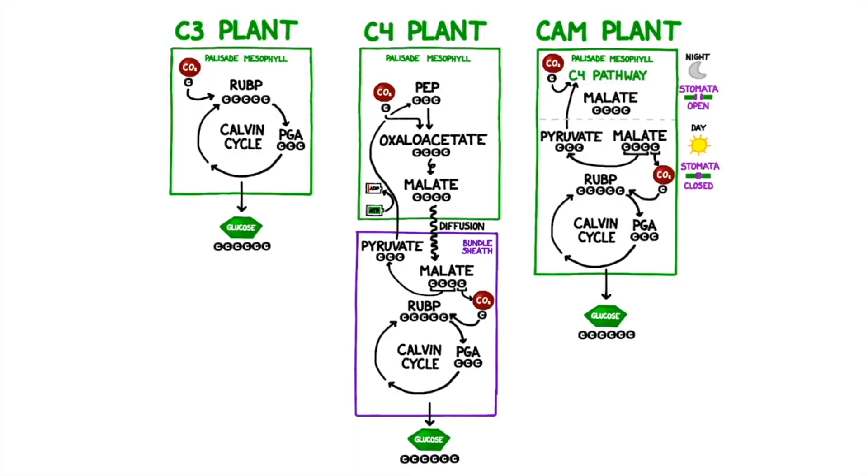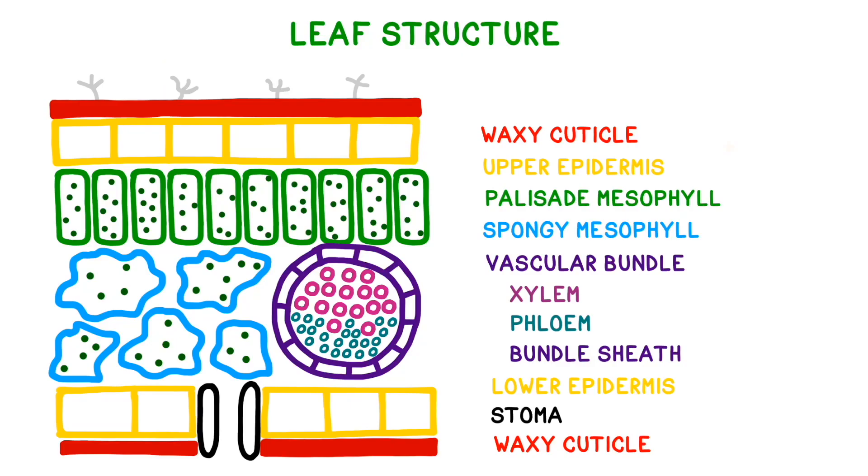C4 and CAM plants, which live in dry environments, have a number of different ways of getting around this problem, including using a modified form of photosynthesis. The lower portion of the leaf usually also has a waxy cuticle, much like the upper portion.